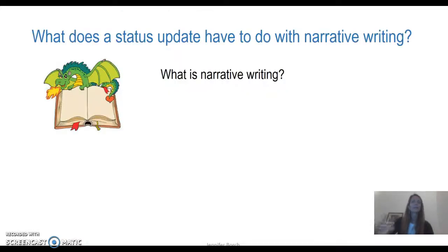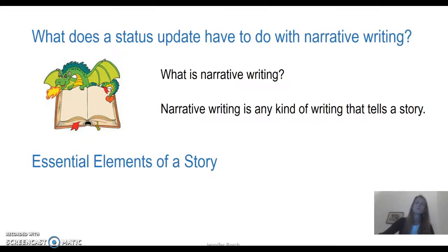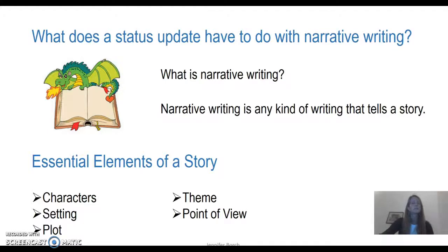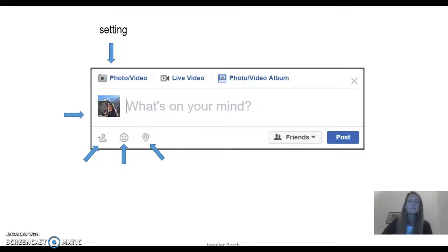When we think about how that relates to narrative writing, we want to first think about what narrative writing is. We talked about this in our last class — it's any kind of writing that tells a story. We talked about the five essential components: characters, setting, plot, theme, and point of view. If we go back to that status update and look at it closely, the option to post a photo or video ties into the setting — it shows us where we are and what's going on. The actual text I'm going to write is related to the plot because I'm telling the story in my status update.